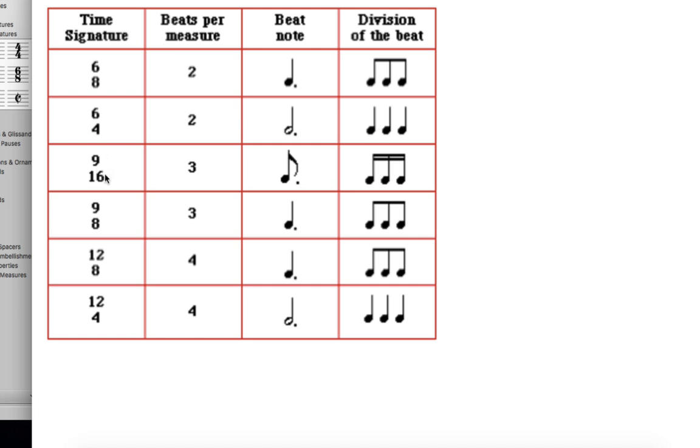9/16, three dotted eighth notes is what gets the pulse. And then the division of the beat is three sixteenth notes.